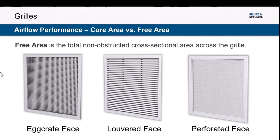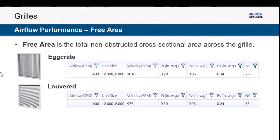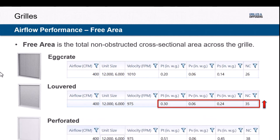The actual geometry, construction, and blade spacings — and in some cases perforated grills — have different performance associated with them because of free area. Comparing a 12x6 egg crate grill at 400 CFM versus a louvered grill at 400 CFM, pressure drop and sound both increase — sound by almost 10 dB, which would be perceived as twice as loud. A perforated grill with even smaller free area at the same conditions yields a pressure drop of about 0.45 and an NC of around 38. So the type of grill can help you achieve the performance characteristics you're looking for.